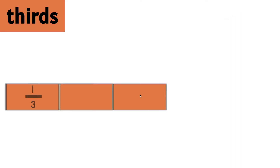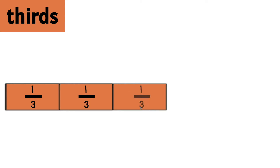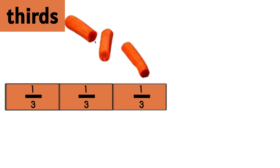Thirds. Let's take a look at this model. We have a whole that is split into one, two, three equal parts. Each one is worth one third. Here we have a carrot that was split into three equal parts. Each part of this carrot is worth one third.